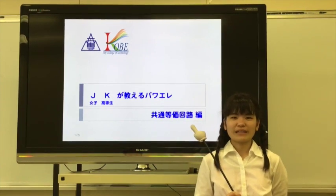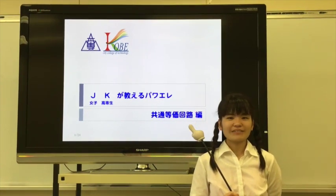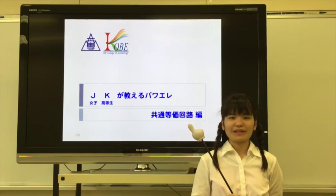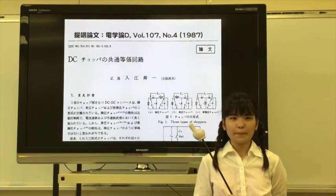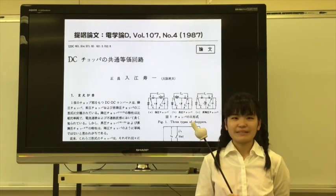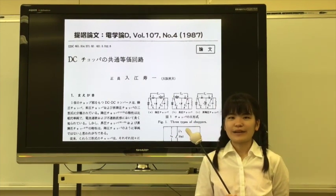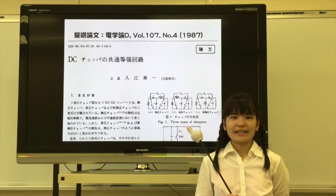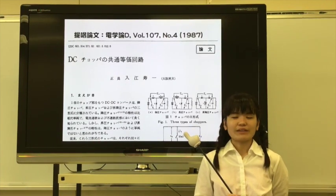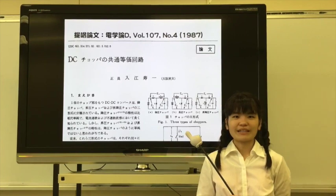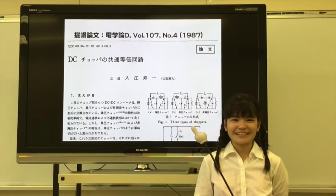If you are wondering what a DC-DC converter is, you should learn it first — you can check that video. This common equivalent circuit was proposed by Professor Elie in 1987. Since before my birth and even now, this theory is used by many researchers. Amazing is the word.